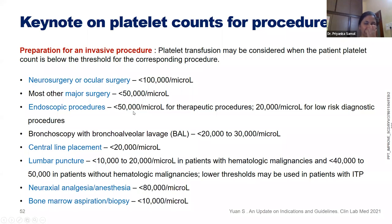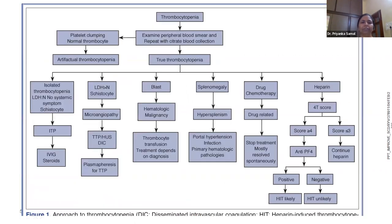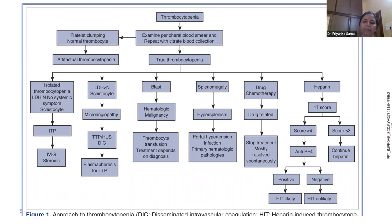Key platelet thresholds for procedures: neurosurgery and ocular surgery require more than 100,000; major orthopedic surgery at least more than 50,000; endoscopic procedures 20,000–50,000; valve procedures 20,000–30,000; central line placement 20,000; lumbar puncture 10,000–20,000 for hematologic malignancies, 40,000–50,000 for others, lower threshold acceptable for ITP; neuroaxial analgesia 80,000; bone marrow aspiration and biopsy 10,000–20,000 sufficient. The final approach: examine the smear, rule out artifactual thrombocytopenia, look at all three lineages, categorize the patient, and arrive at a diagnosis to manage appropriately.